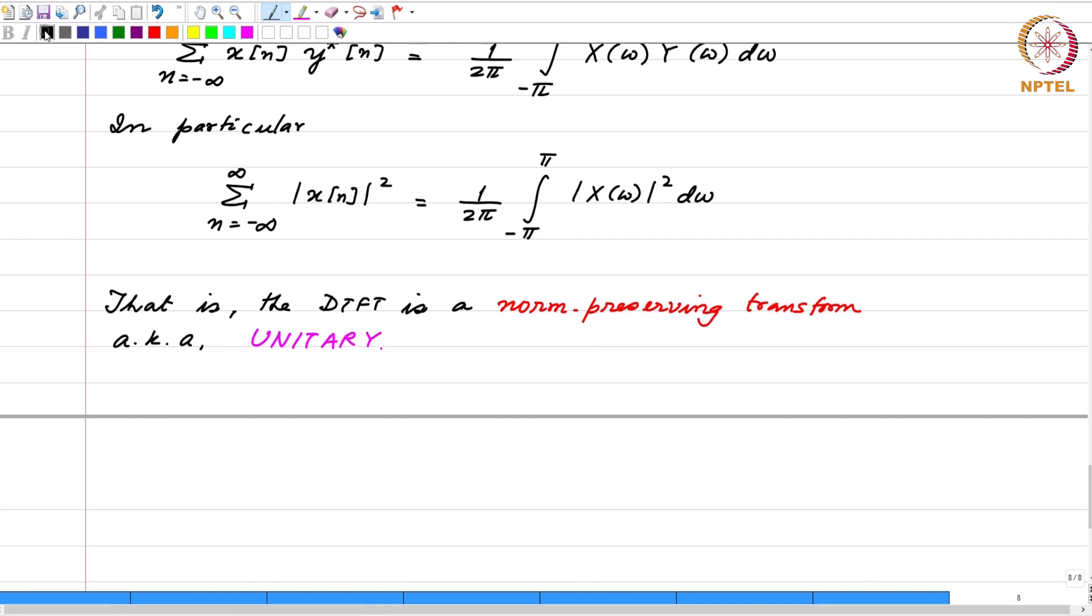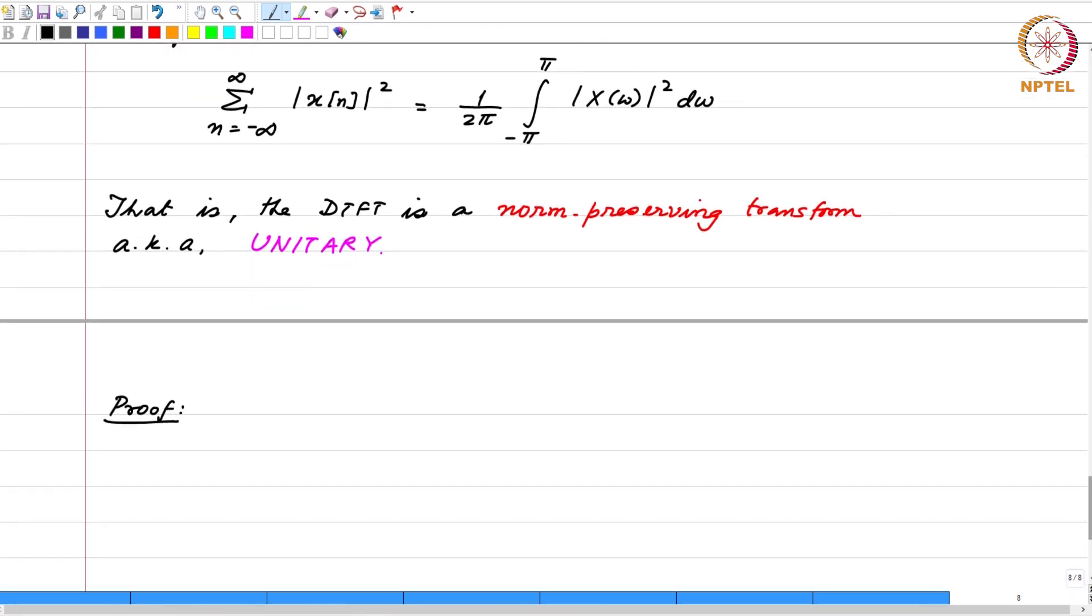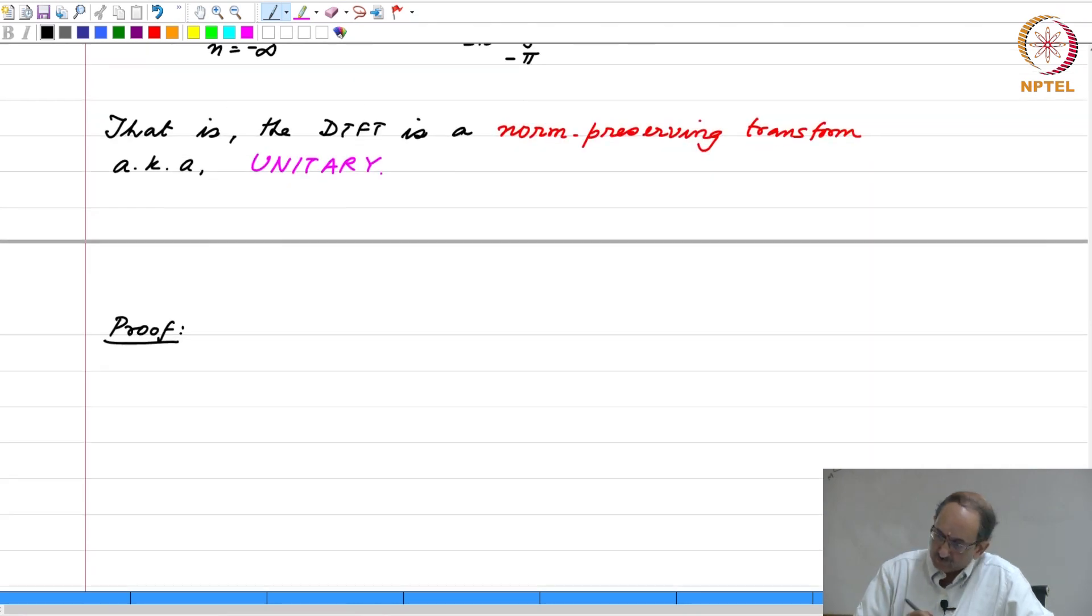And the proof is really simple. We will use two properties that we have already seen before, and the simple application of these two properties will give rise to this result. We have already seen that x star of n corresponds to x star of minus omega.